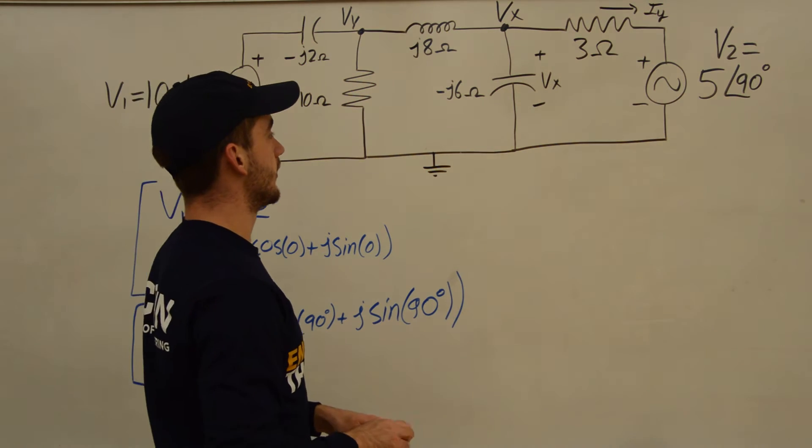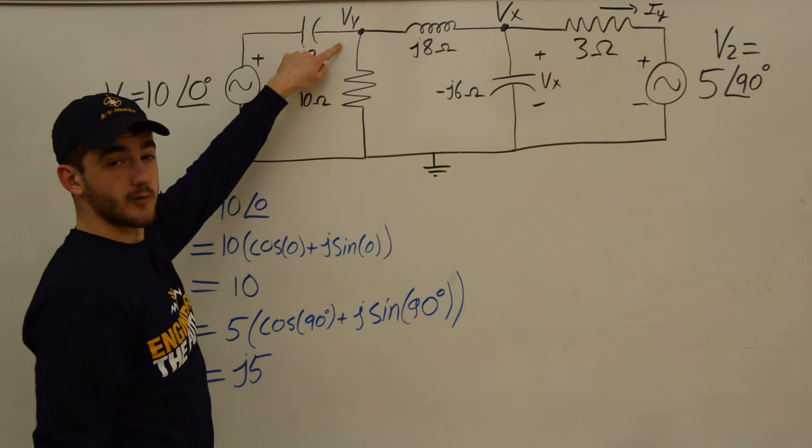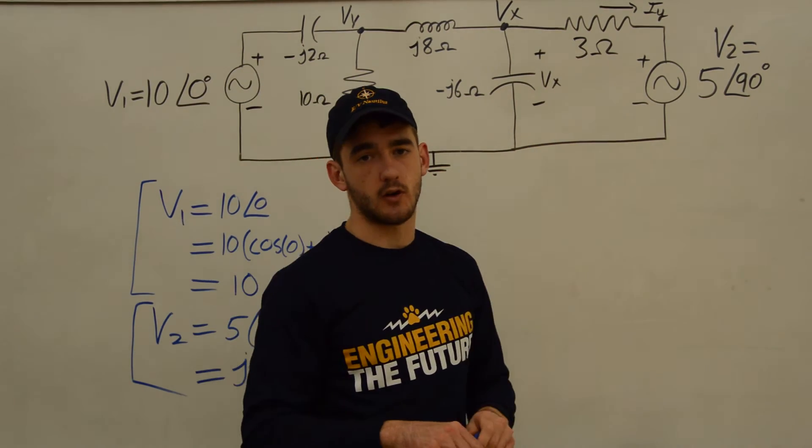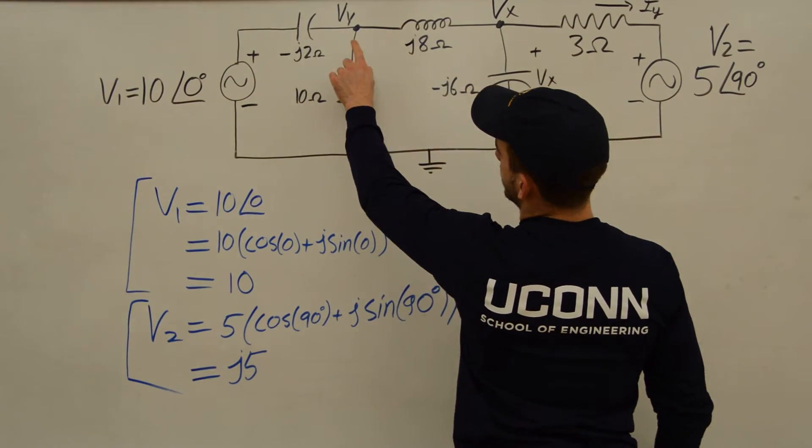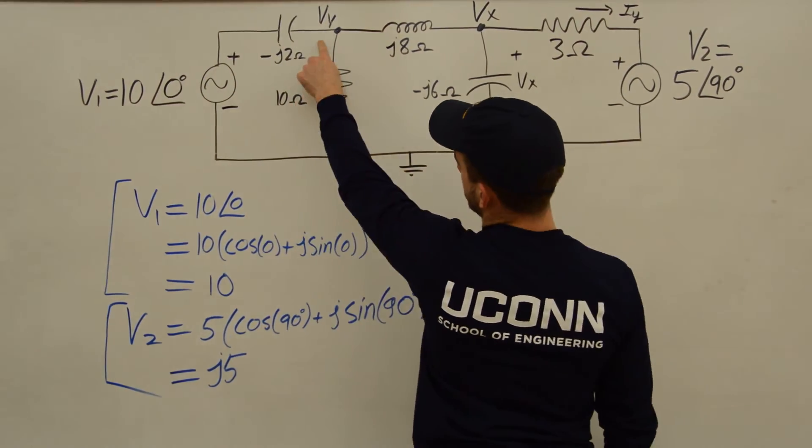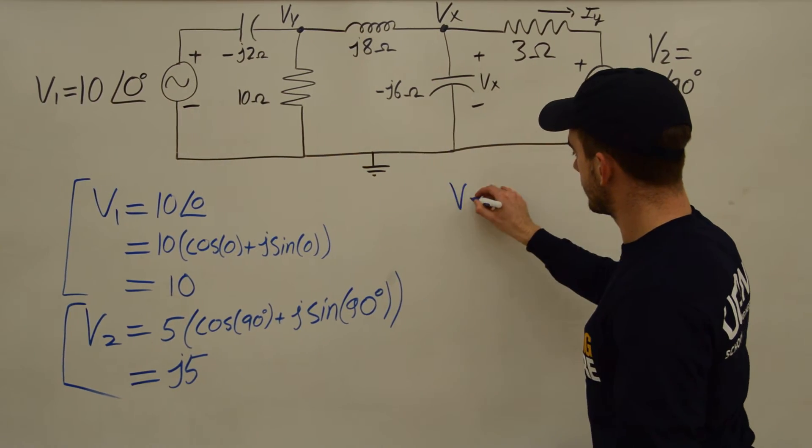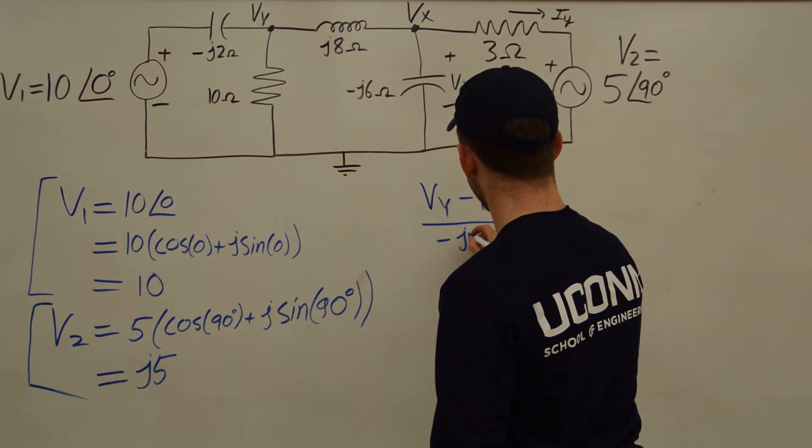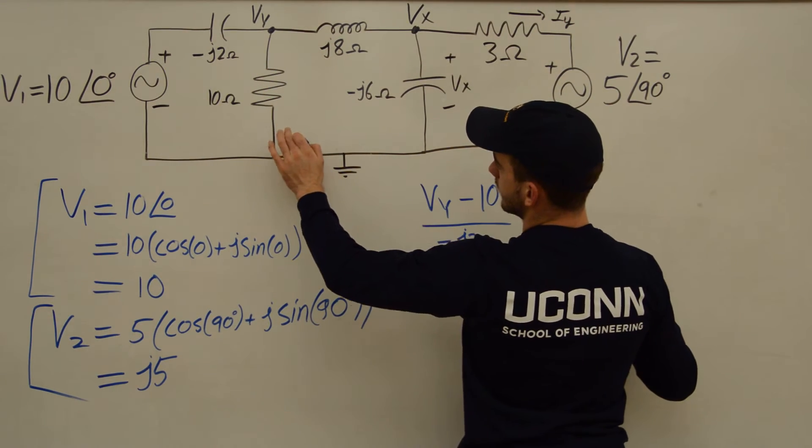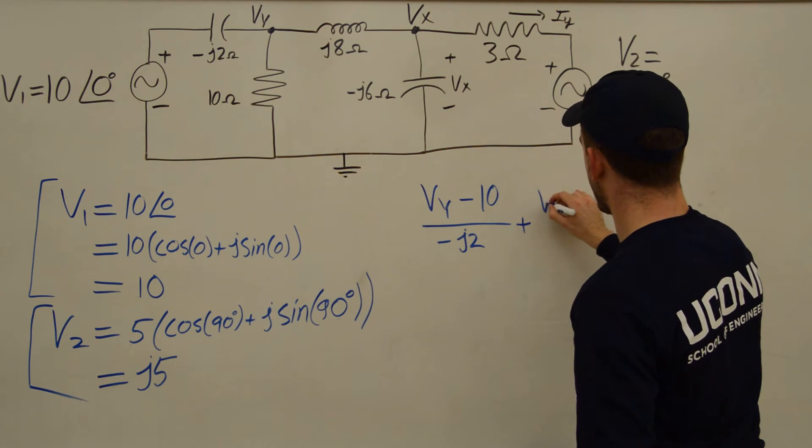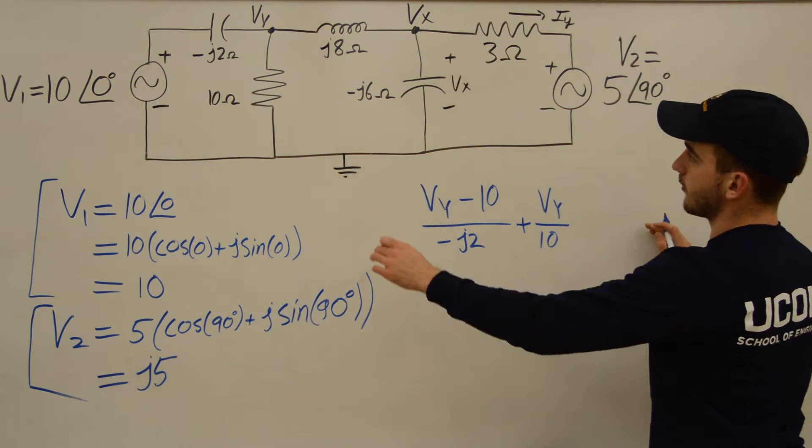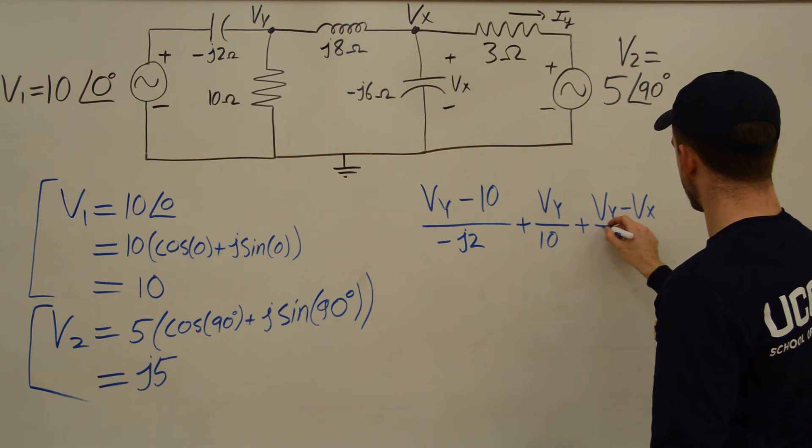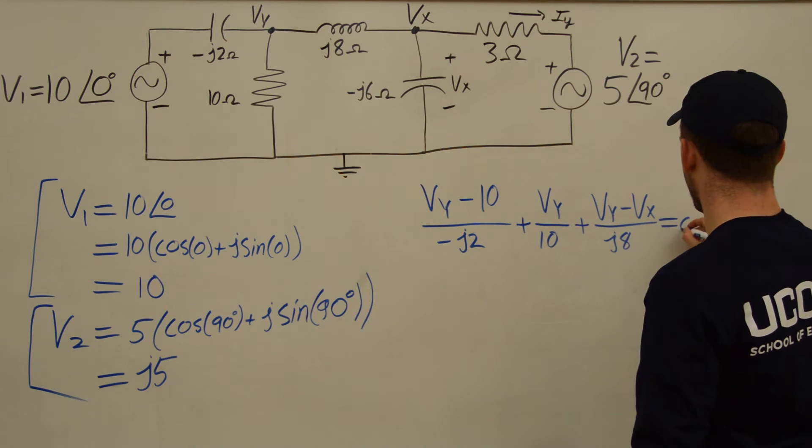So now let's do some nodal analysis. This is conveniently called Vx, and we'll call this one Vy. And we'll just go ahead, it's a pretty straightforward thing, like you've been learning all semester long, just nodal analysis. So we'll have Vy minus V1, and remember V1 is 10, so we'll have Vy minus 10. That's all over negative J2. Then we'll have Vy minus Vx over J8. That all equals 0. So that's equation 1.